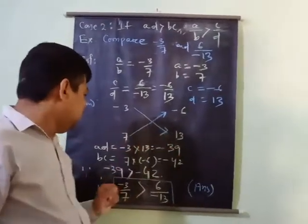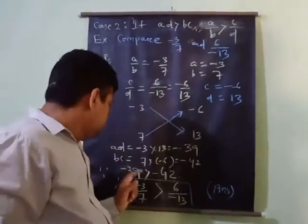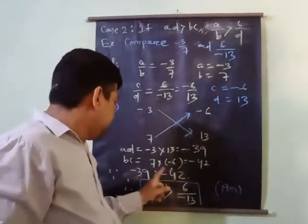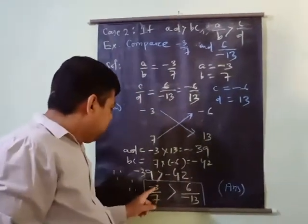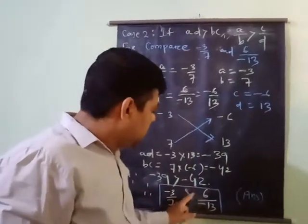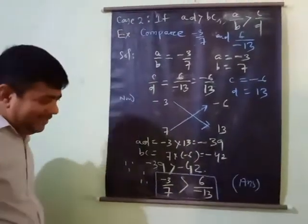You see, AD is equal to minus 39, BC is equal to minus 42. Since minus 39 is greater than minus 42, which means AD is greater than BC. That's why, see, minus 3 by 7 is greater than 6 by minus 13.